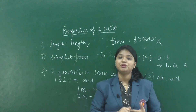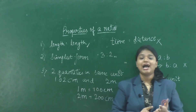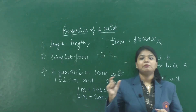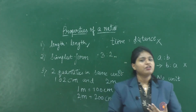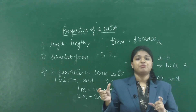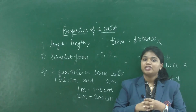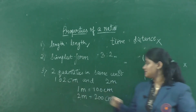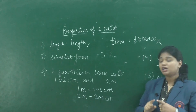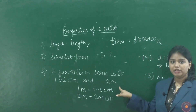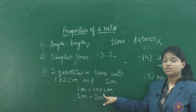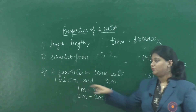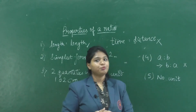Third, to find the ratio between two quantities they must be expressed in the same unit. Same kind means you can find the ratio between 20 centimeters and two meters, but not between 20 kg and 5 hours. To convert: one meter equals 100 centimeters, so two meters equals 200 centimeters, allowing us to compare 102 centimeters and 200 centimeters.